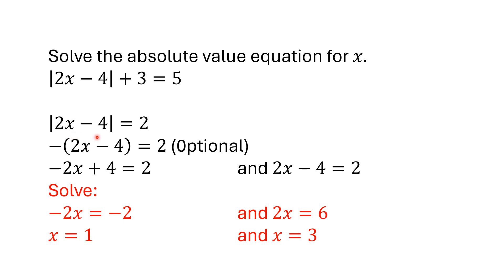In the second case, 2 times 3 is 6. Minus 4 is 2. The absolute value of 2 is 2. It works.